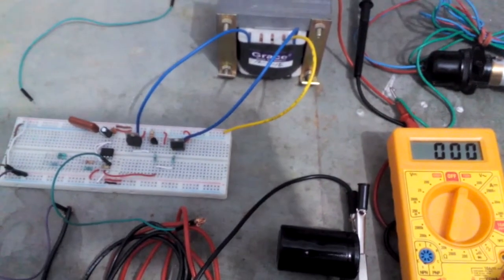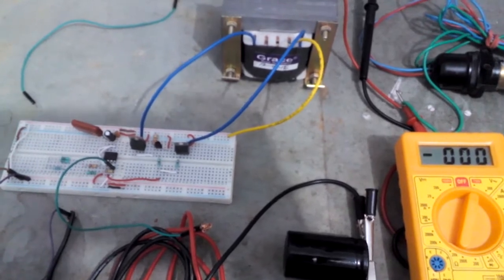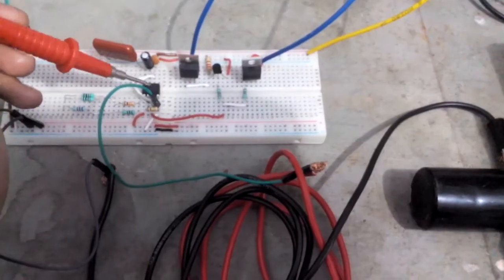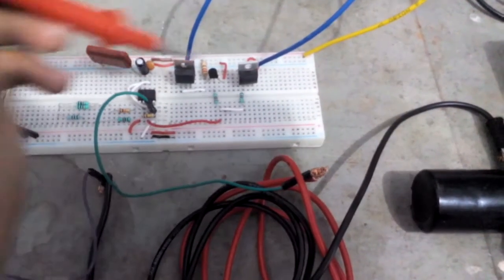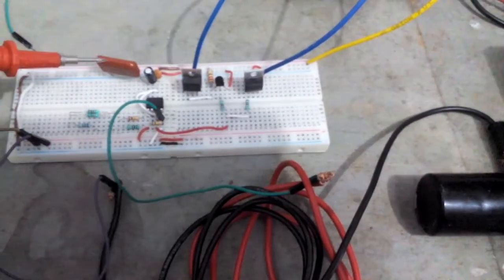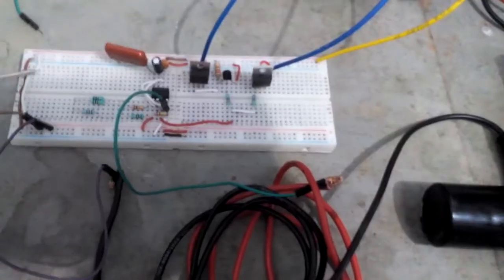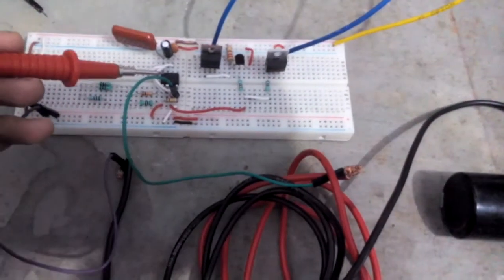So here this is the demonstration video of our square wave inverter and this is our main circuit with the triple five timer IC and with some transistors and some capacitors. In our previous video we have already seen how this triple five will generate a square wave.